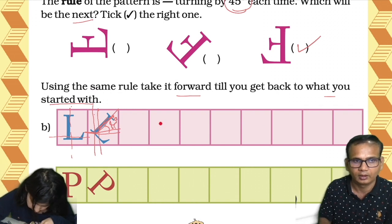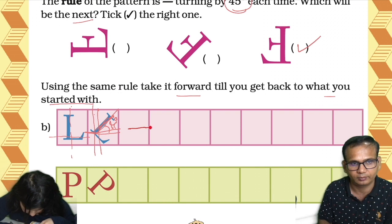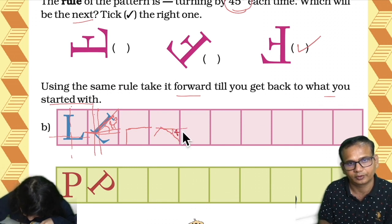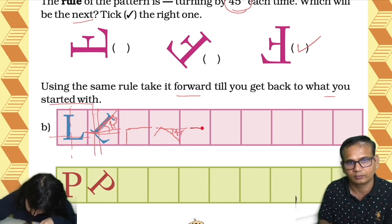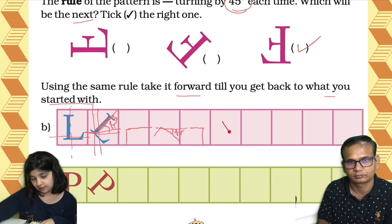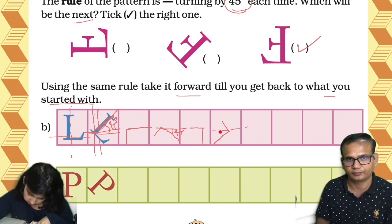So the next L will be like this, and then the next L will be like this — that's a 45-degree turn. And then again L will be like this. Drawing plus signs makes it easier — this will be like 45 degrees each time.